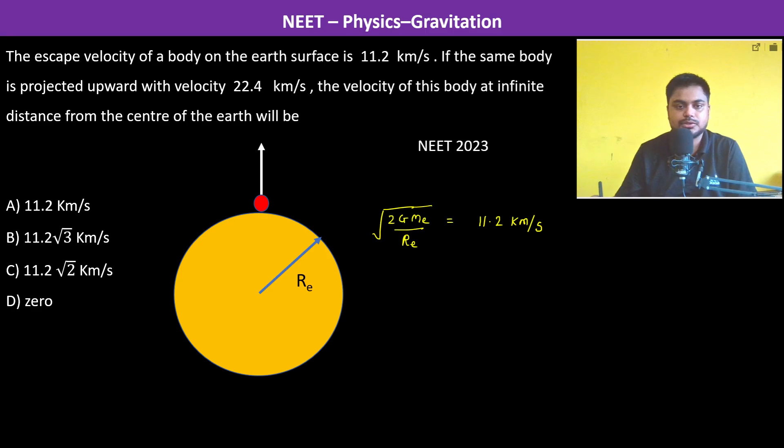At Rₑ, the energy is going to be -GMₑm/Rₑ + ½mv². Now this v, since 11.2 is the escape velocity, therefore 22.4 will be 2√(2GMₑ/Rₑ), this whole square. So this is going to be equal to -GMₑm/Rₑ plus